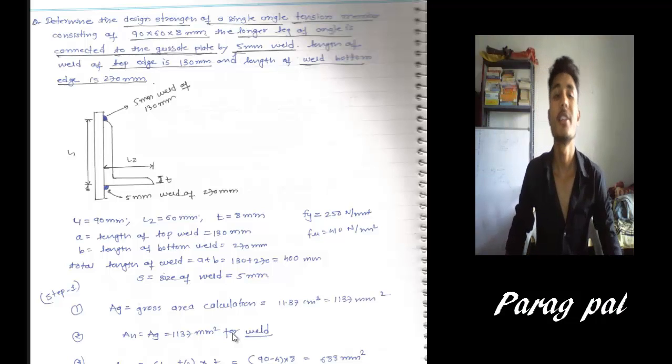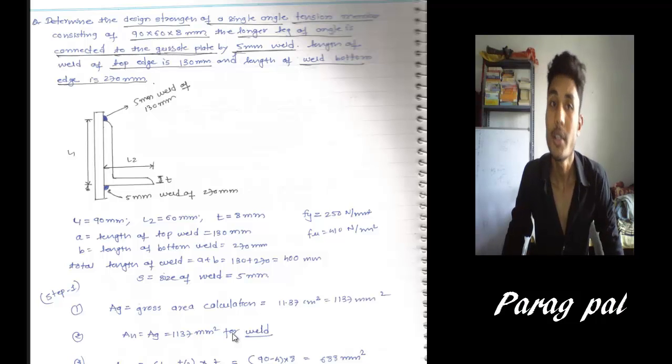Hello everyone, this is Parag and today we are going to discuss a new numerical. Determine the design strength of the single angle tension member consisting of 90 by 60 by 8, where the longer leg is connected to the gusset plate by 5mm weld.